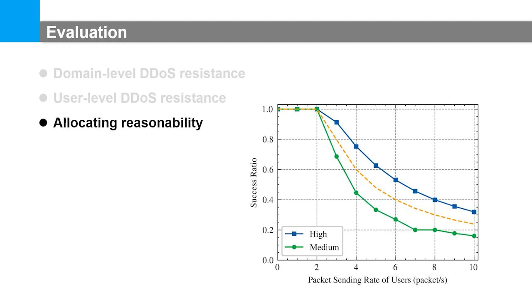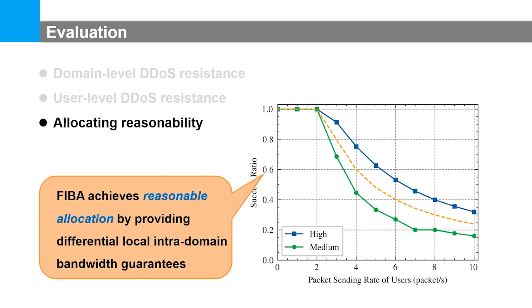We finally evaluate allocating reasonability by observing the success ratio from legitimate ASes. As the number of capability request packets increases, the success ratios of both tagged requests show a declining trend. The dashed line is the average success ratio in a per-client file-sharing scheme. The curve of the high-priority queue is consistently higher than that of the medium-priority queue, indicating that requests in the high queue obtain more bandwidth guarantee. FEBA thus achieves reasonable allocation by providing differential local intradomain bandwidth guarantees for active and ordinary users.